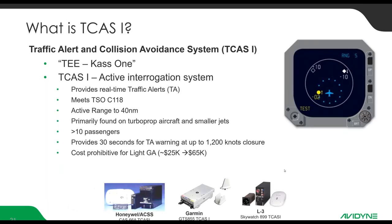TCAS-1 is also an active interrogation system, but it provides traffic alerts without resolution advisories. It has the same algorithms — still providing 30 seconds of warning at up to 1,200 knots of closure. It's TSO C-118, also has 40 nautical-mile range, and is mandated for any revenue passenger service over 10 passengers. Prices are a little more modest but still cost-prohibitive for most light GA at $25,000 to $65,000 — examples include the Honeywell ACSS system, Garmin, and the L3 system.